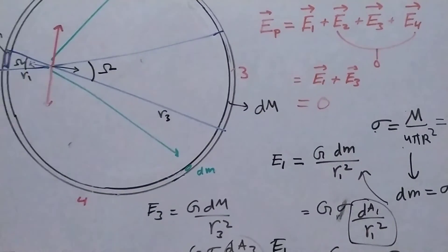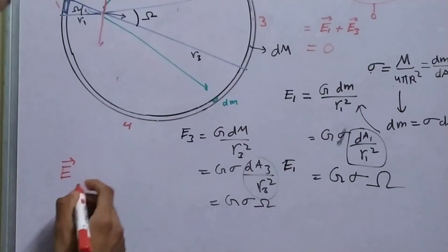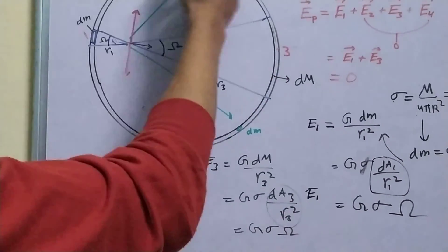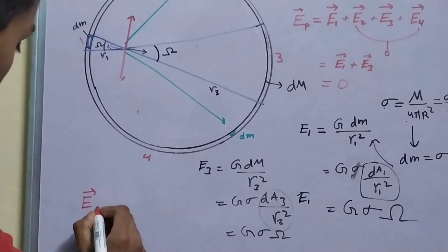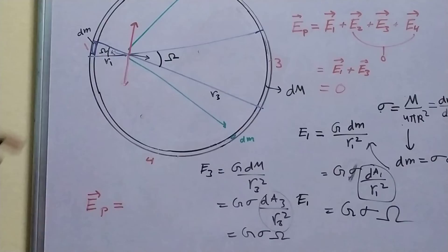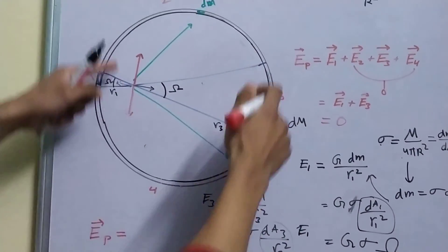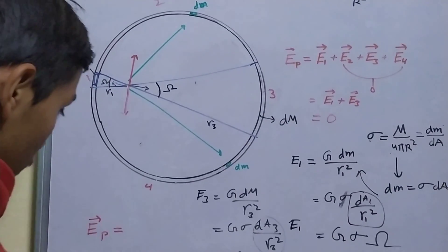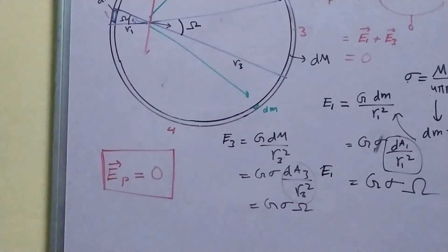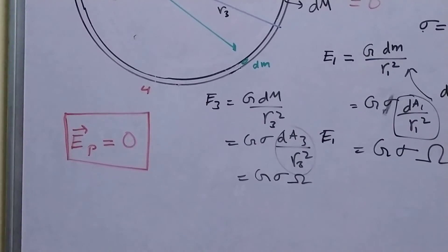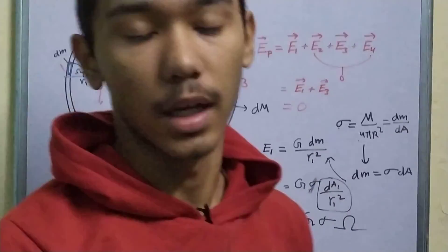So, the electric field, sorry, the gravitational field at any point, since you have chosen a random point, it works for all the points, inside this hollow sphere or a shell is zero. So, that's it for today. Thanks for watching.